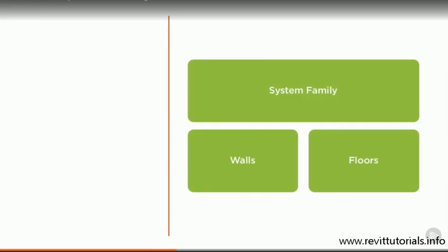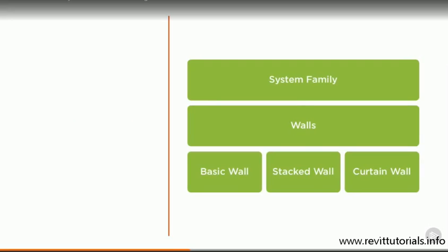Examples of system family categories are walls and floors. Within each family category, we have different families. There are three built-in wall families, which are a basic wall, a stacked wall, and a curtain wall.